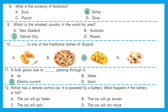Question 12: Rohan has a remote control car powered by a battery. What happens if the battery is flat? Battery being flat means it is empty, so the car will not move without any battery.